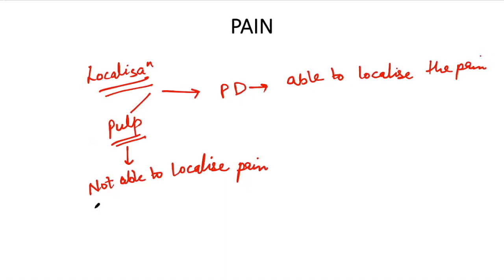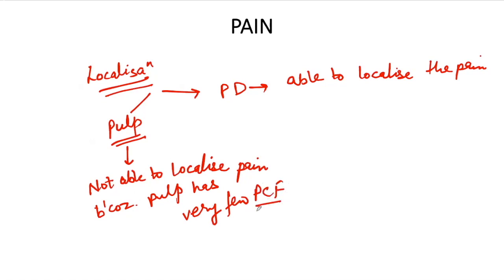Now why does this happen? This happens because the pulp has very few proprioceptive fibers. Proprioceptive fibers are the fibers which give us the sense of location. Therefore, a patient with disease in the pulp will not be able to localize the pain. But since the periodontium has proprioceptive fibers, a patient with periodontal disease is able to tell the location and position of the tooth. Note this important point: the pulp has very few proprioceptive fibers — it doesn't mean pulp has none — but they are too few to localize the culprit tooth.